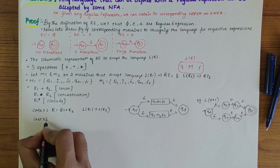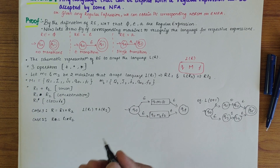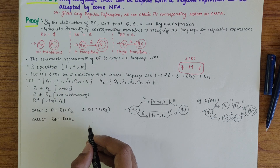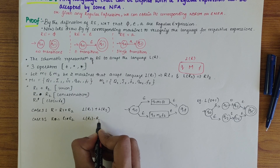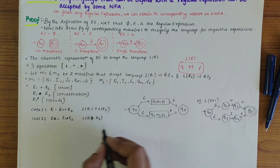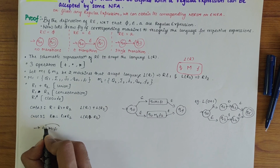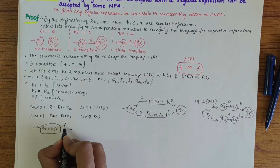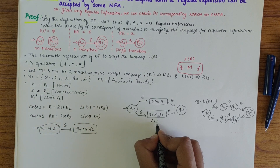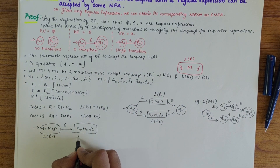Case 2: R = R1 · R2. We need to construct an Epsilon-NFA to accept L(R1) followed by L(R2), represented as L(R1 · R2). The corresponding machine starts from Q1, runs through M1 to F1, then over an Epsilon transition reaches Q2 and runs through M2 to F2. This L(R1) portion is followed by the L(R2) portion.